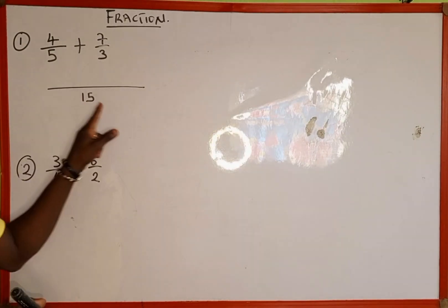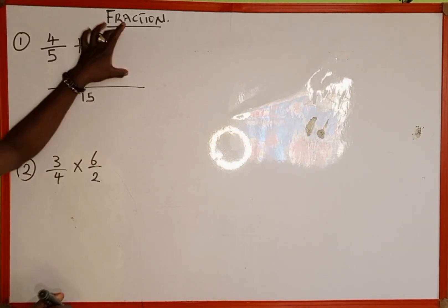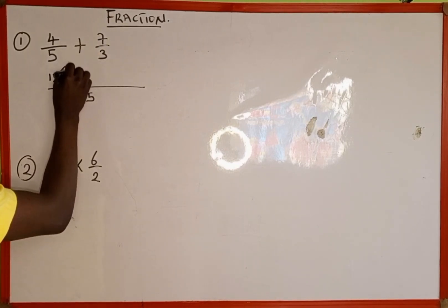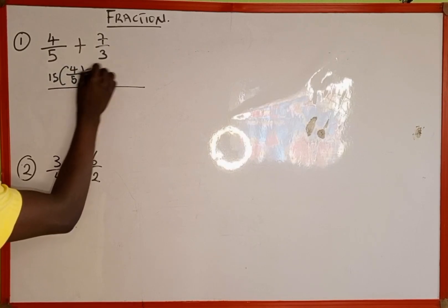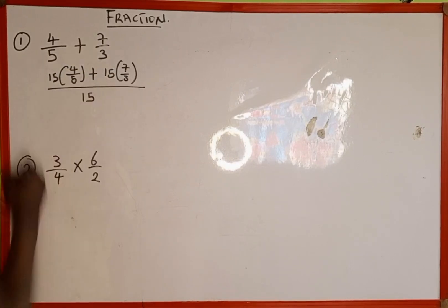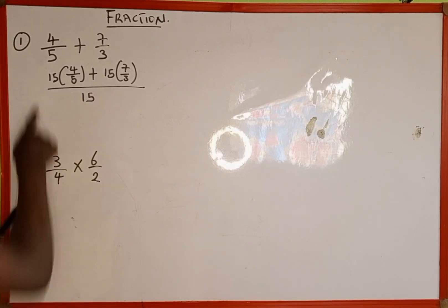So the next thing we're going to do is take the same LCM and multiply through by this fraction. So we have 15 multiplied by 4 over 5, plus we also multiply 15 by 7 over 3.